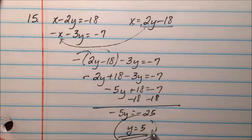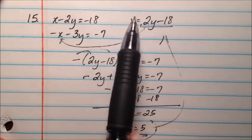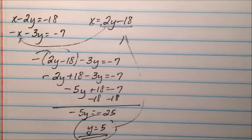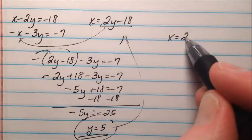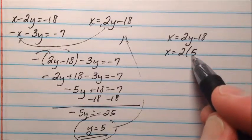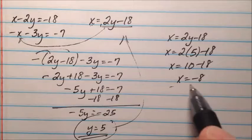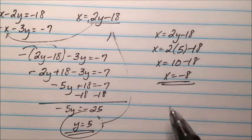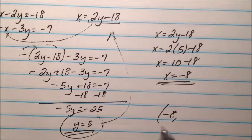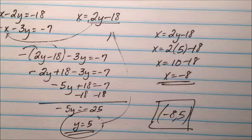We plug y equals 5 back into the equation where x is already isolated: x equals 2y minus 18, so x equals 2 times 5 minus 18, which is 10 minus 18, so x equals negative 8. Our ordered pair is negative 8, 5, and these two lines intersect at that one point, so their classification will be consistent and independent.